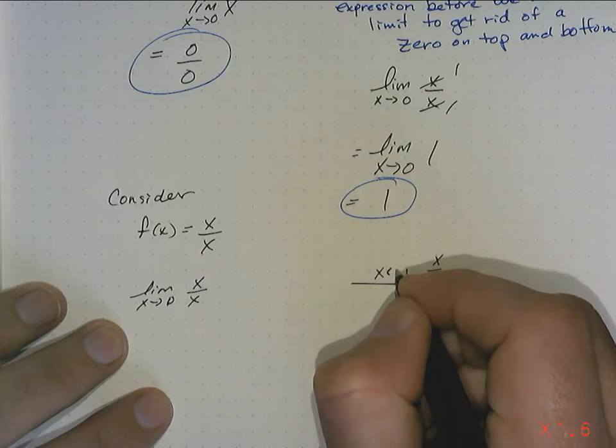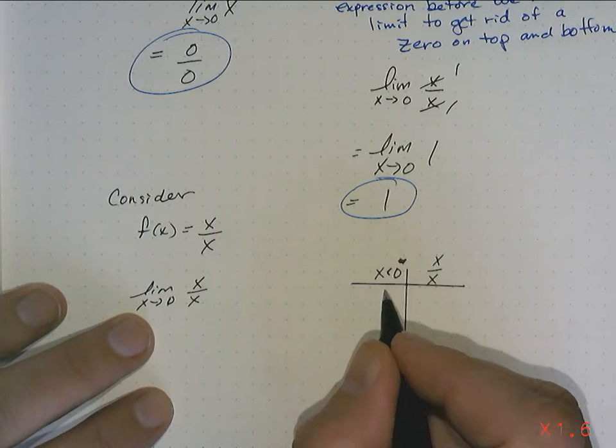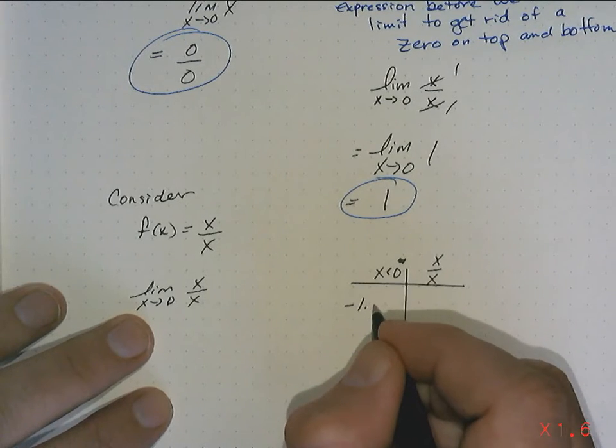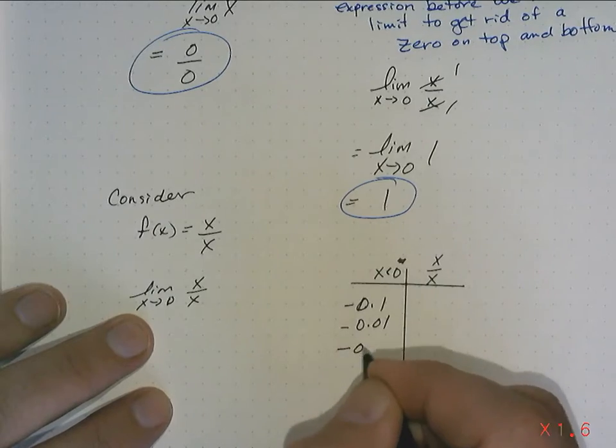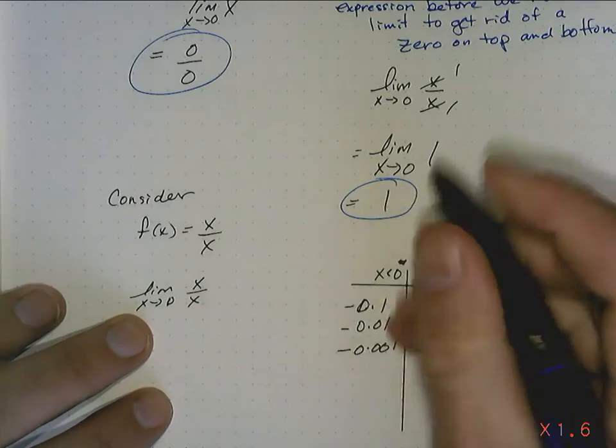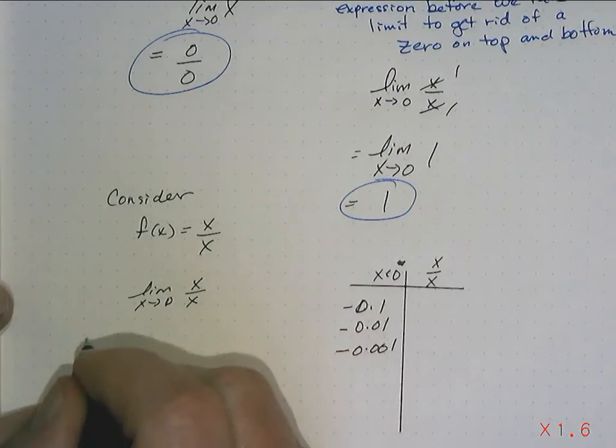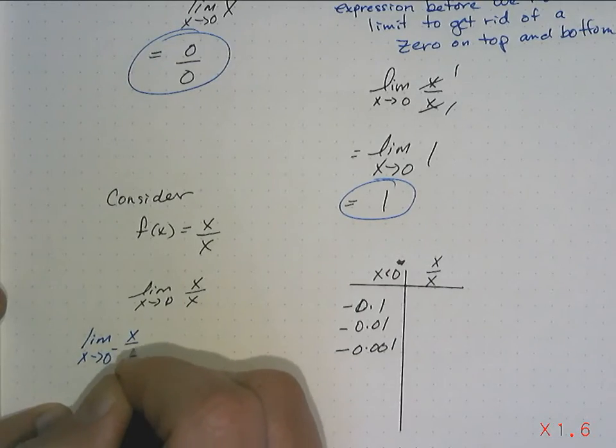So here is the left-hand limit. So I'm going to choose values of x that are less than 1. So it's going to be negative 0.1, negative 0.01, negative 0.001. So this is for the left-handed limit. This is the limit as x approaches 0 from the left of x over x.